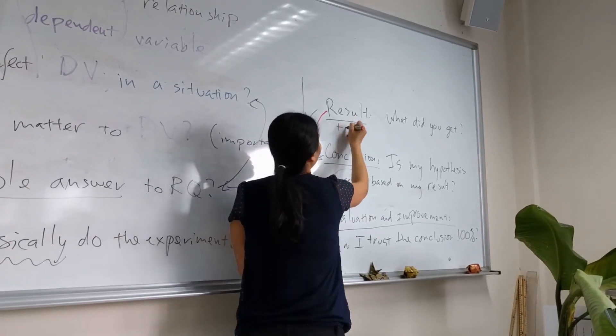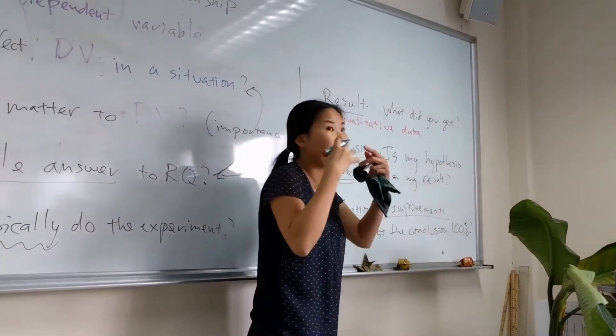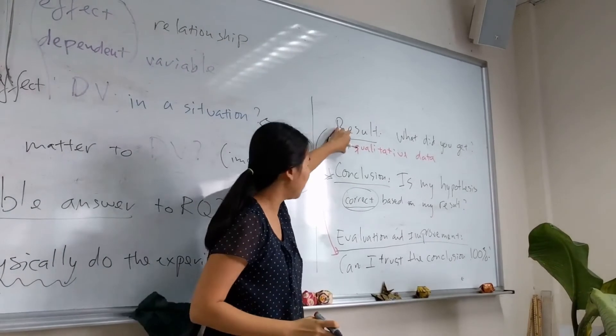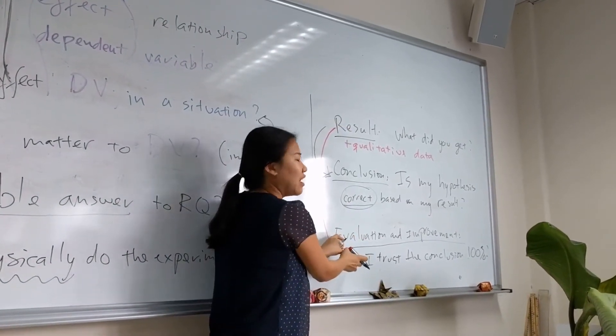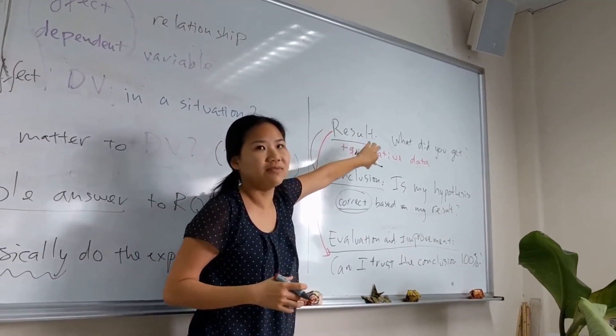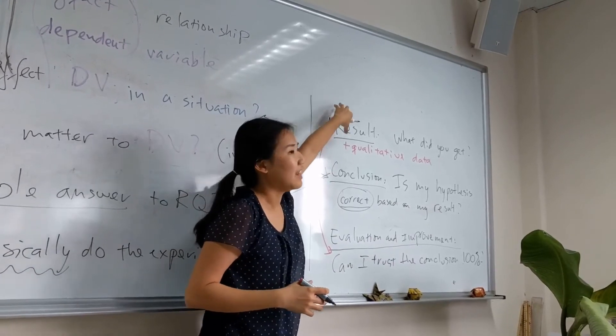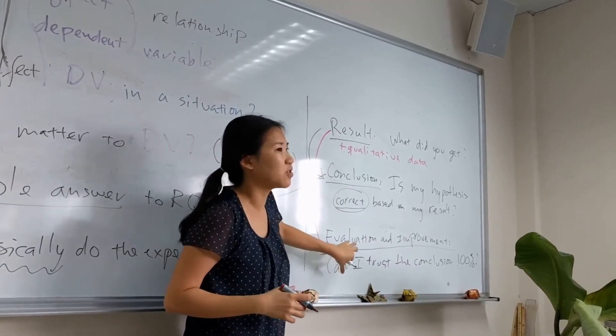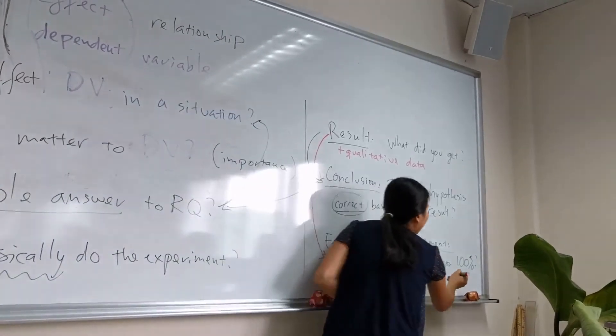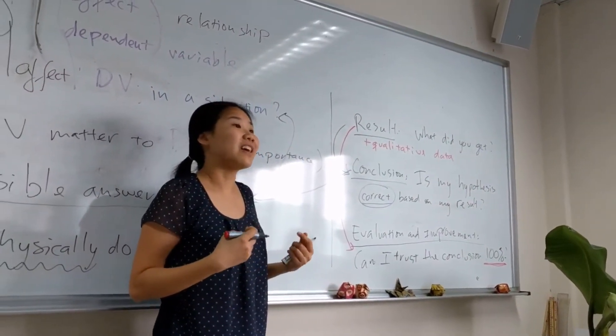This is where your qualitative data, qualitative data is what you observe. So if you observe something in the result, you can mention it in the evaluation. I think I can trust this conclusion because according to my qualitative data, or according to my actual graph, so it looks like I can trust my conclusion. But a lot of times you can't trust your conclusion 100% of the time because there are some kind of error.